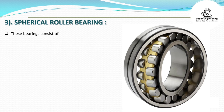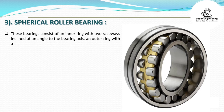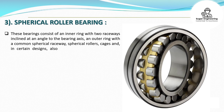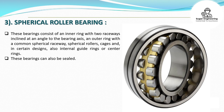Spherical roller bearings consist of an inner ring with two raceways inclined at an angle to the bearing axis, an outer ring with a common spherical raceway, spherical rollers, cages, and in certain designs also internal guide rings or center rings. These bearings can also be sealed.